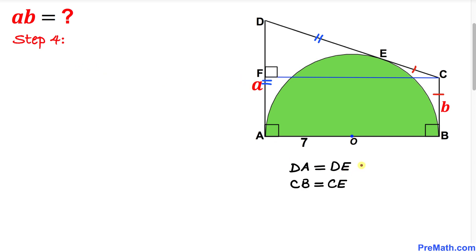Here's our next step. We know that side length DA equals DE, and DA is a, so DE is also a. Moreover, CB equals CE, and CB is b, so CE is also b.